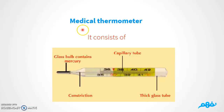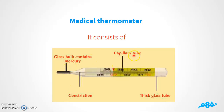Let's look at the medical thermometer. It consists of: number one, a glass bulb containing mercury; number two, a capillary tube; number three, a thick glass tube; and number four, a constriction.